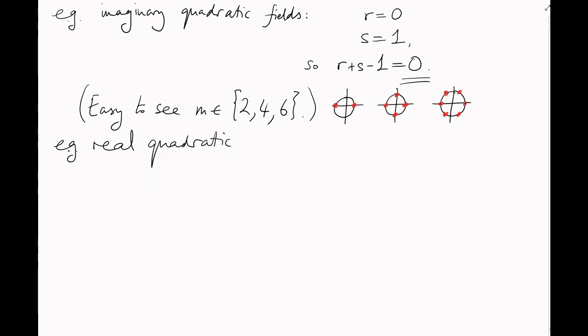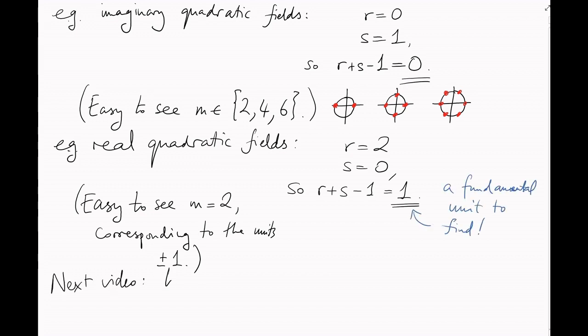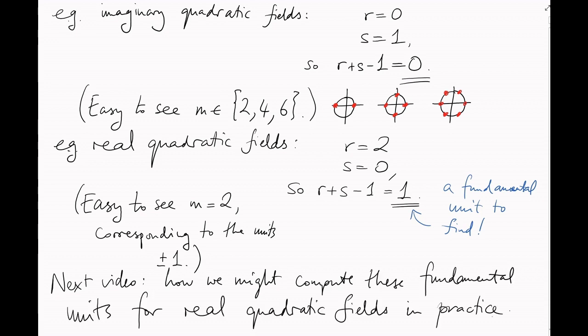For real quadratic fields, on the other hand, well, the only real roots of unity are plus and minus one, so that's the finite bit sorted. For the free abelian bit, there will always be two real embeddings corresponding to positive and negative square roots, and there'll be no imaginary embeddings, so there's a free abelian part of rank one, and we have a fundamental unit to find. Next video, I'll show how we might go about computing the fundamental units for real quadratic fields in practice.